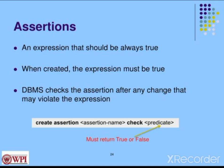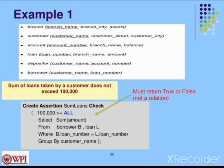Assertions use a condition check, unlike triggers which use an event-condition-action model where an event occurs and actions are performed automatically. For assertions, the syntax is: CREATE ASSERTION assertion_name CHECK, and then give the predicate. The predicate must return true or false.